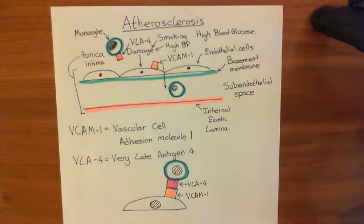The monocytes, which are circulating in the bloodstream, they have a complementary protein to VCAM-1, known as VLA-4, which stands for very late antigen 4.